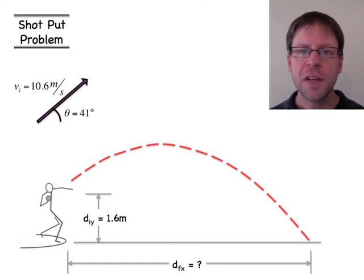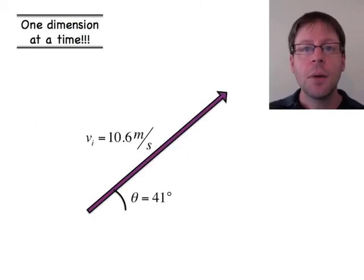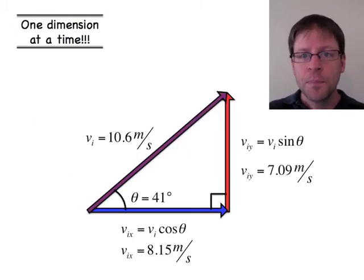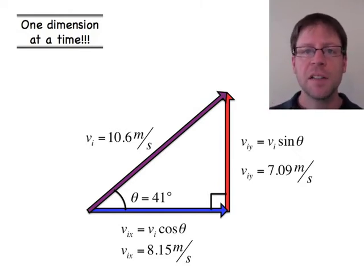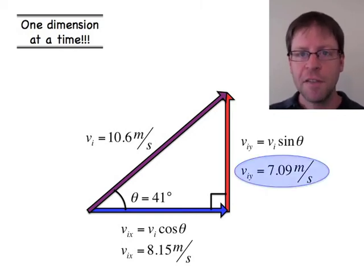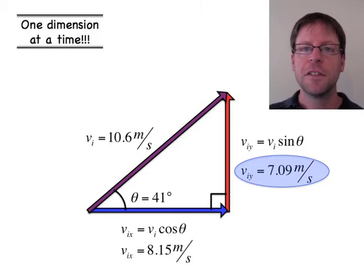Just like we did in the first video, we're going to need to split that velocity vector, that initial velocity, into components. Now I'm not showing all of the math here, but here's the end result. So I get 7.09 meters per second as the initial upward velocity. Later on I will use the 8.15, but keep that number in mind for just a moment.